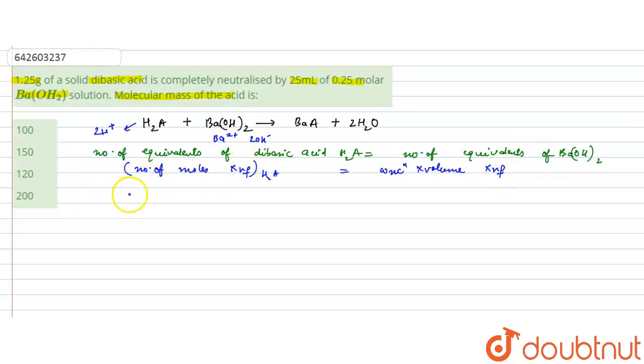So we can also cancel the n factor here. So the number of moles of acid H₂A will be equal to the concentration of the base that is 0.25 molar into its volume that is 25 ml. We have cancelled the n factors as they both are equal to 2. So from here we can calculate the number of moles of H₂A.